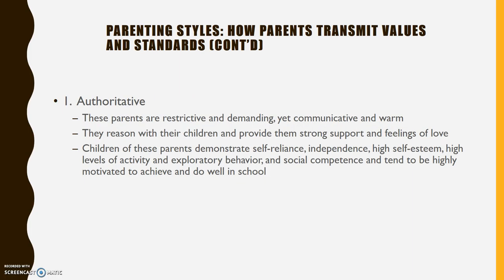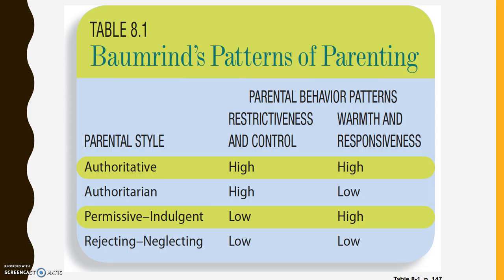Authoritative parents — high on both dimensions — reason with their children and provide support. Children of authoritative parents often have a high sense of self-reliance and independence, high self-esteem, do well in school, and seem to be motivated to achieve. These four parenting types are shown in figure 8.1 in your book.